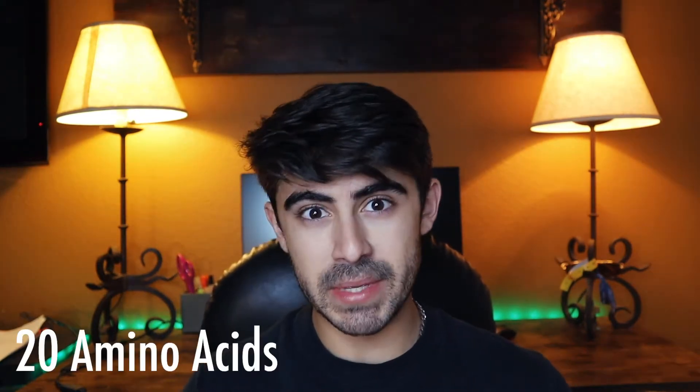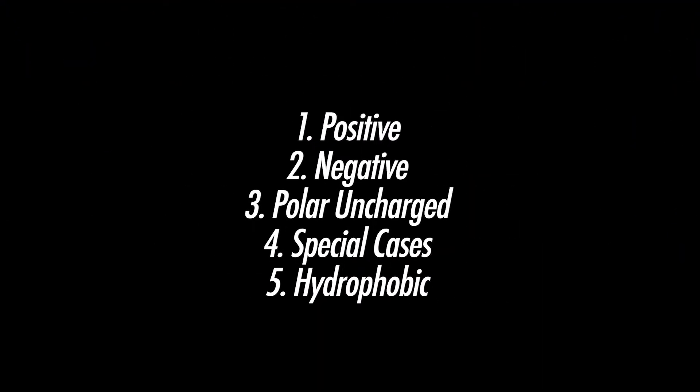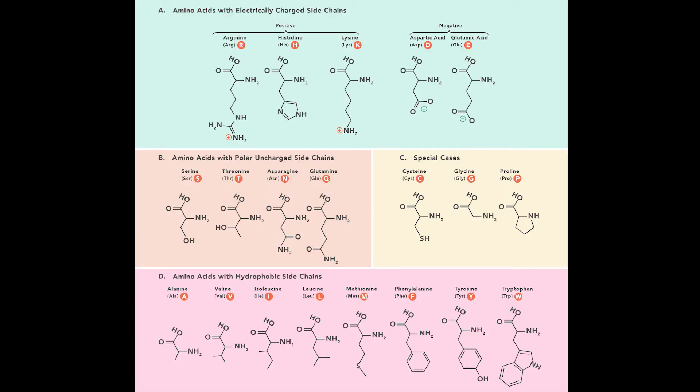So with that, let's get into it. We have a total of 20 amino acids. Number one is to put them into groups. We have positive, negative, polar uncharged, special cases, and hydrophobic amino acids. I used this chart that I'm displaying now to actually view the amino acids and learn them. I took each group one at a time and remembered how many amino acids are in each group.